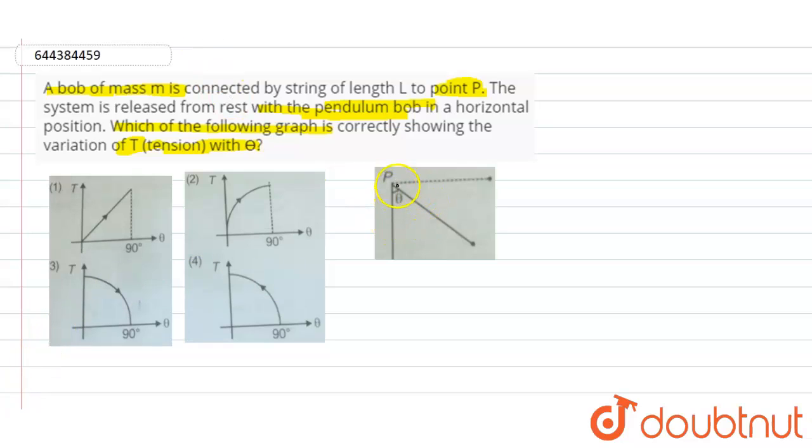If you look into this diagram carefully, at point P we have connected the string. The length of the string is L. The bob is made to release from rest, so it moves like a pendulum.